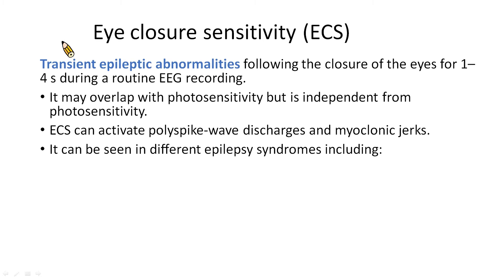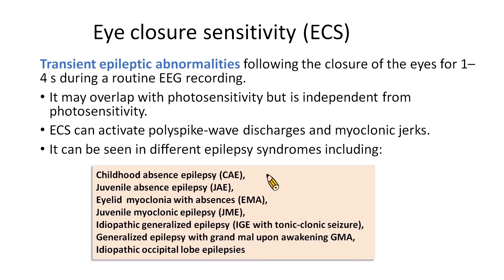Eye closure sensitivity is a unique EEG phenomenon described as the non-incidental appearance of transient epileptic abnormalities following eye closure for one to four seconds during a routine EEG recording. It may overlap with photosensitivity but is independent from it. Eye closure sensitivity can activate polyspike-wave discharges and myoclonic jerks.